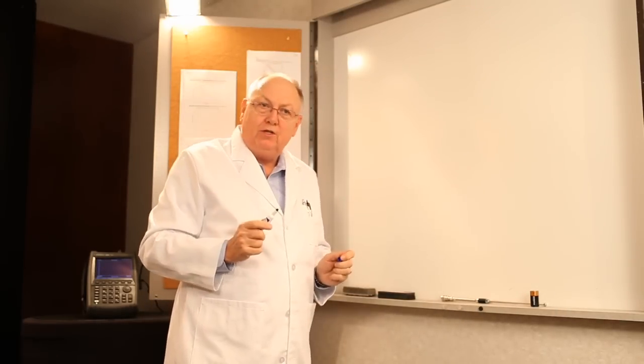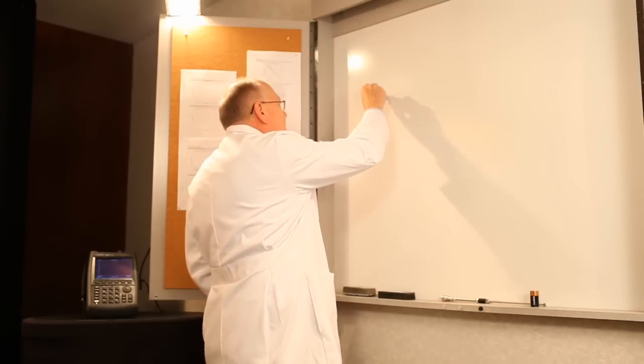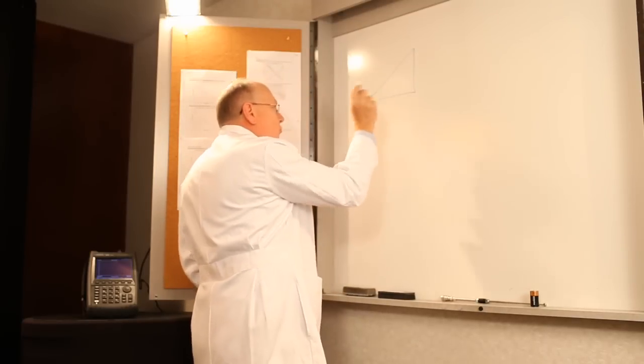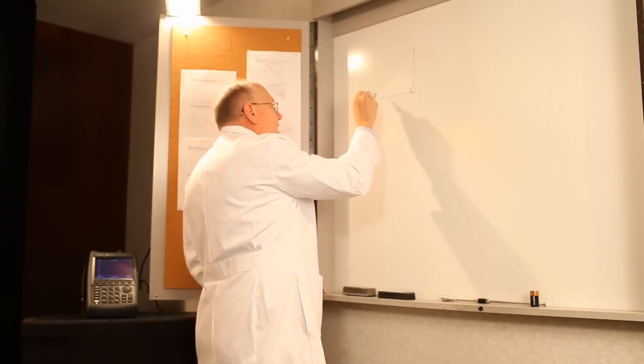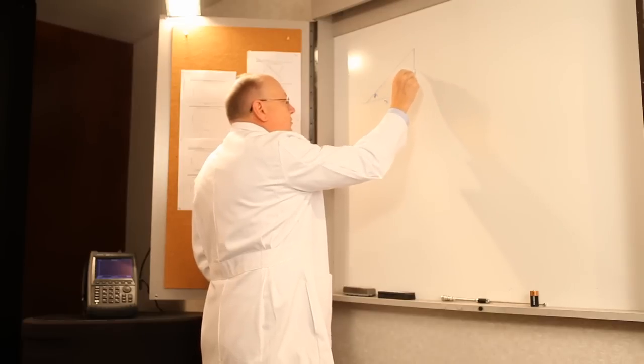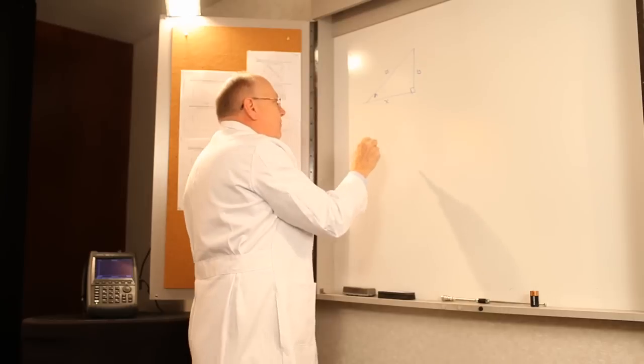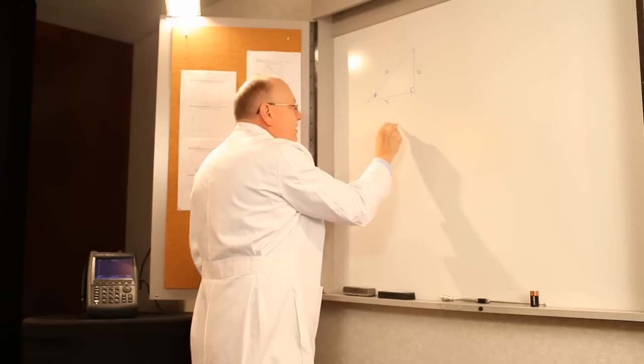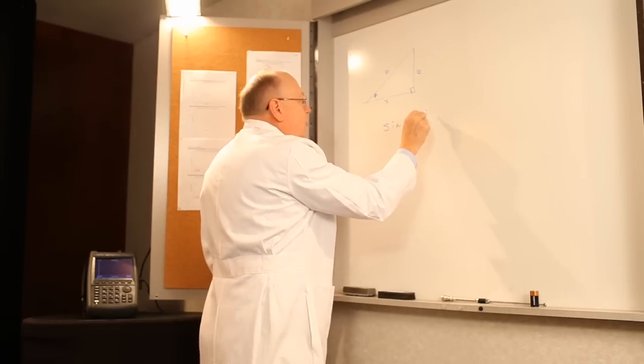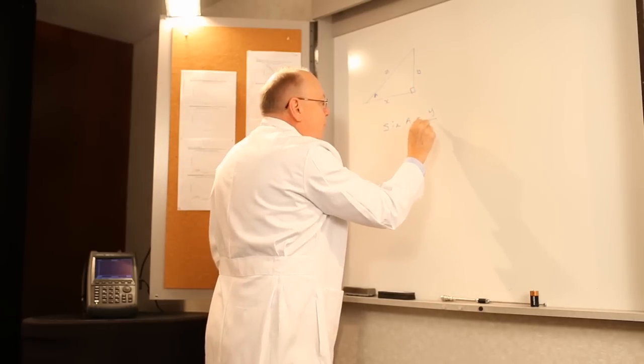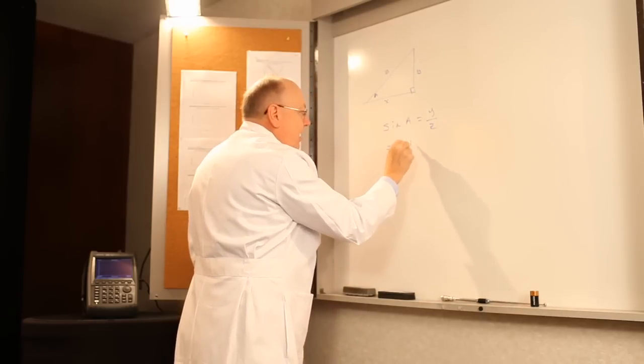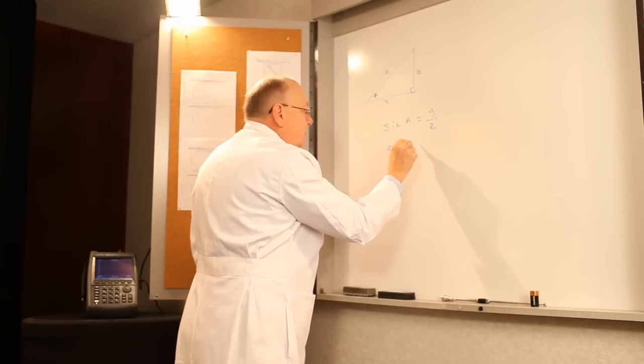Actually, first I should show you what a sine wave is. If you remember from trigonometry, if you have a right triangle and an angle A, and the sides are X, Y, and Z, then the sine of angle A is equal to Y over Z.